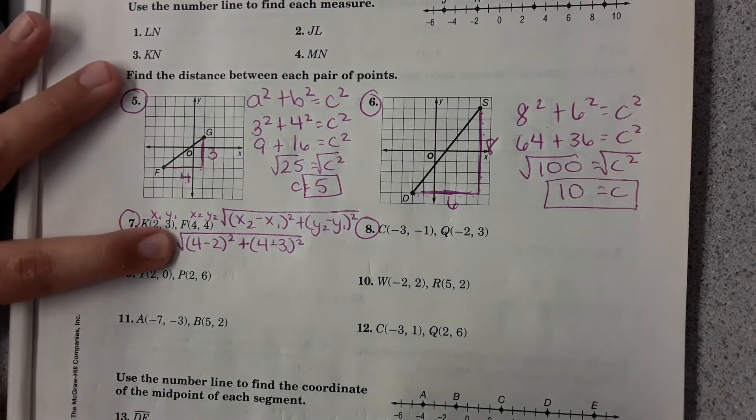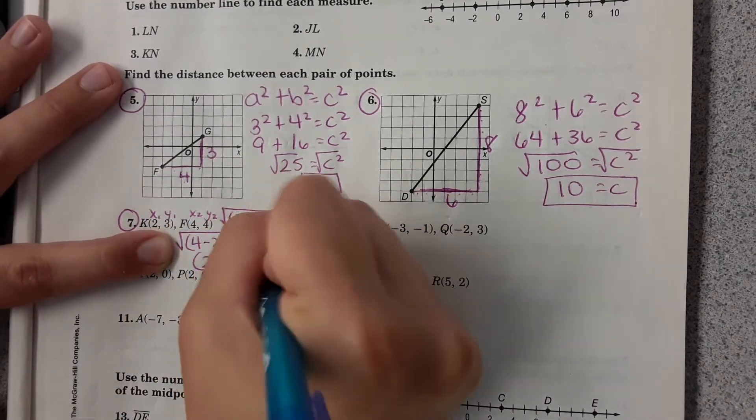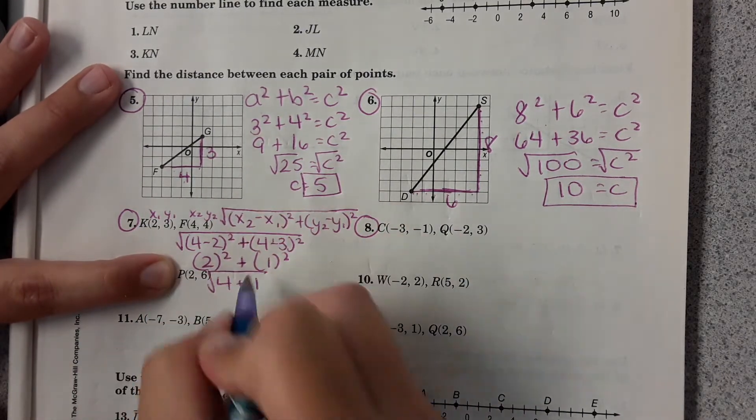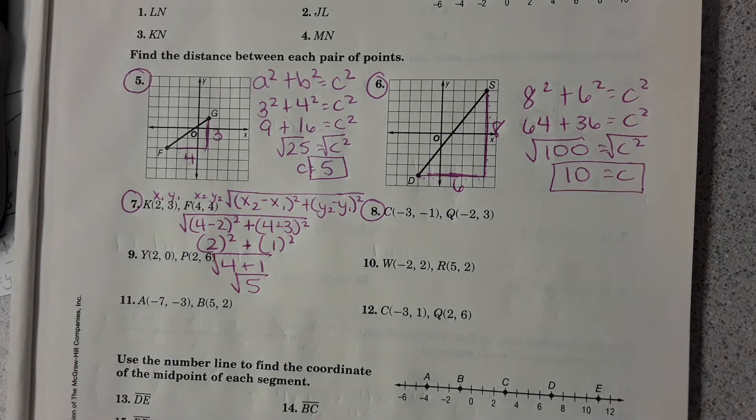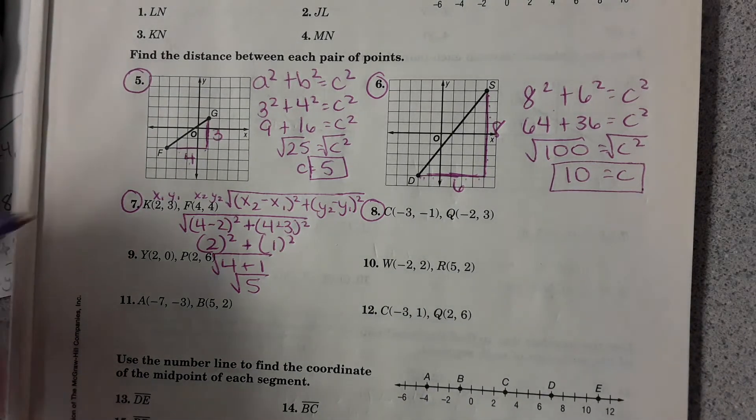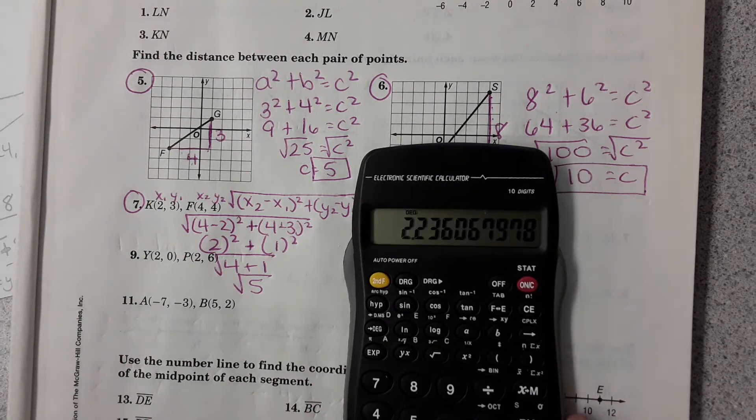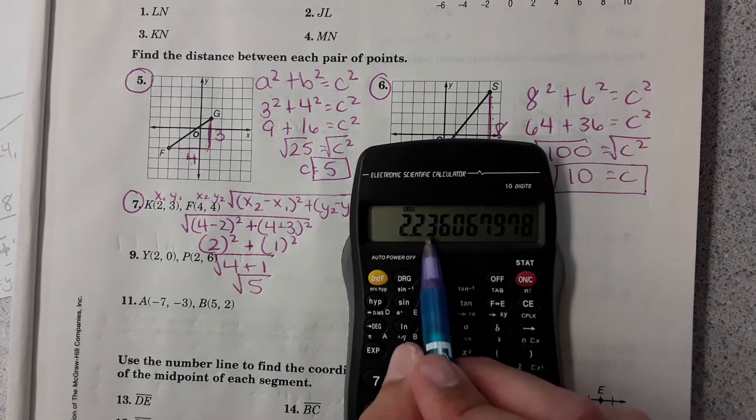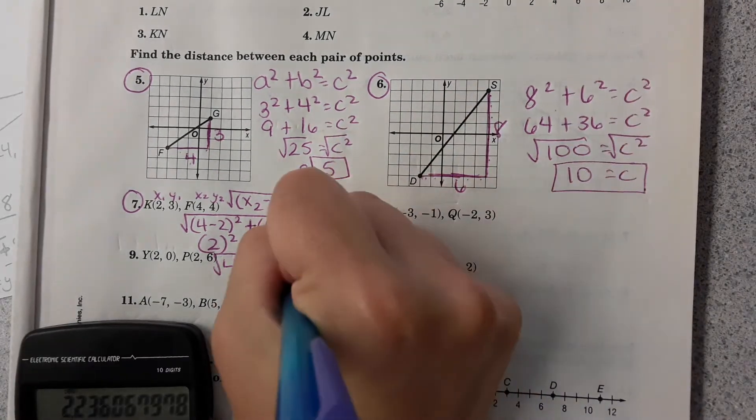Again, follow the order of operations to solve. The last step is to take square root of 5, and it comes out to a really long number like this. Round to the nearest hundredths place, which would be 2.24. This 3 would round up to 4 because this is 5 or higher. So 2.24.